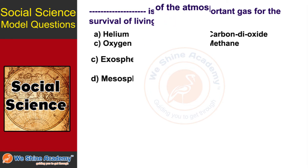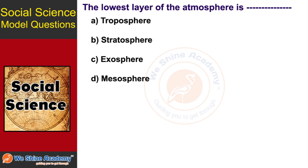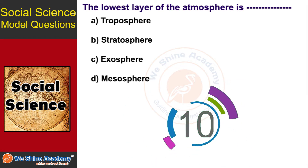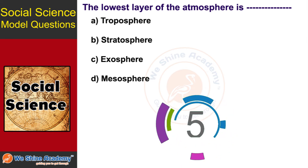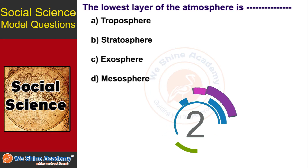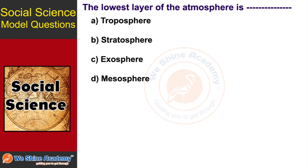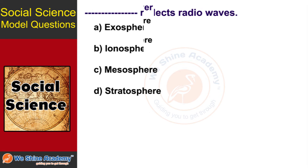The next question is: the lowest layer of the atmosphere is dash. In 10 seconds we will find the answer. The answer is Option A: Troposphere.